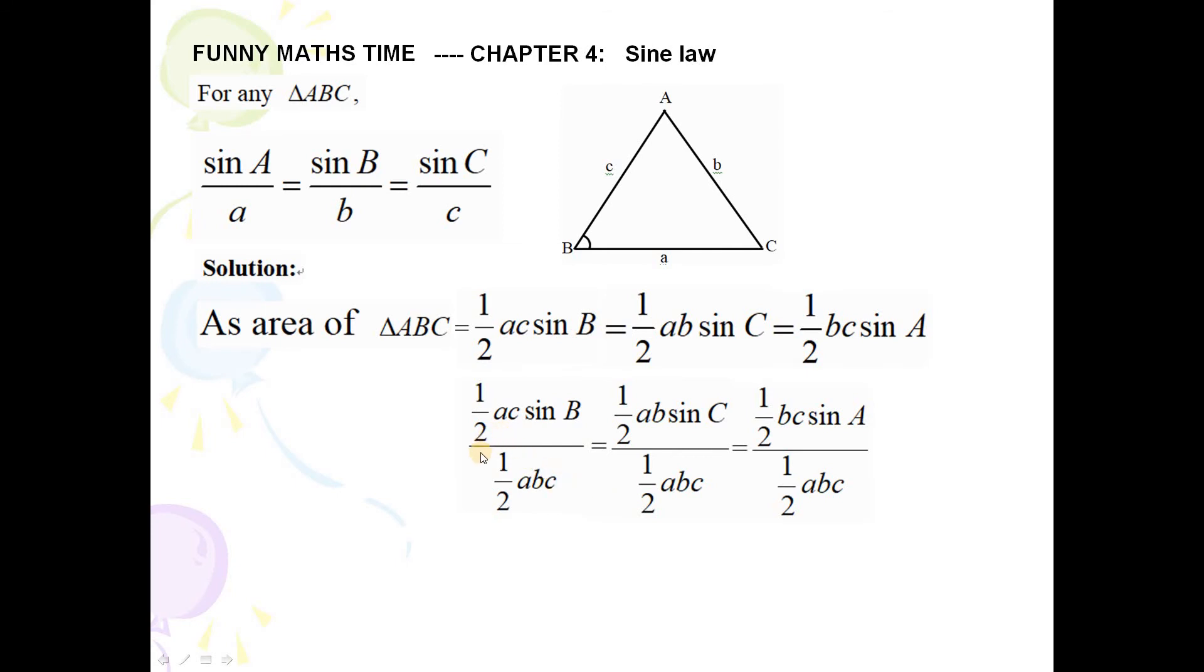And we can discover that 1 over 2 can be cancelled. A cancelled. C is cancelled. Only left sin B and b. See? Yes, sin B over b. This is the first of our equation.